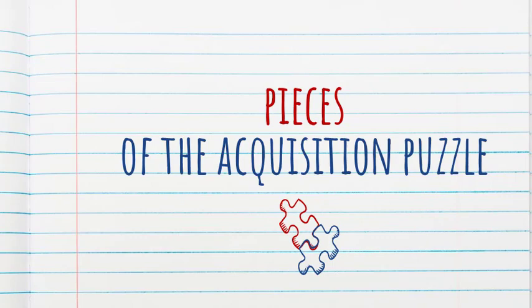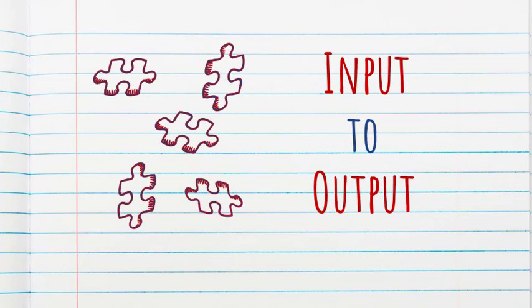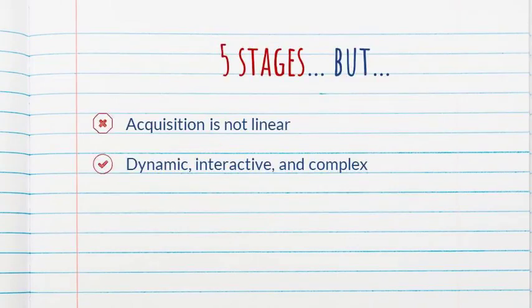Why do I think it's important to unpack this particular chapter? Because it helps to underscore just how complex it is to go from input to output. Susan Gass proposes five stages, but she's not saying that language acquisition is linear and it happens step by step. What she's trying to do is highlight the dynamic, interactive, and complex process that acquisition is. So let's unpack these five puzzle pieces.